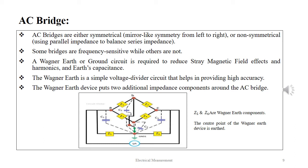A Wagner Earth is required to reduce stray magnetic field effects and harmonics and earth capacitance. The Wagner Earth is a simple voltage divider circuit that helps in providing high accuracy to the AC bridge. The Wagner Earth device puts two additional impedance components around the AC bridge. Z5 and Z6 are the two additional impedance components, which are Wagner Earth components. The center point of the Wagner Earth device is always earthed.